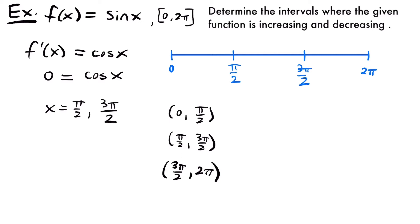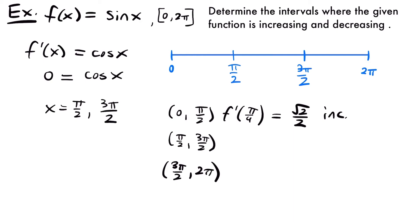Testing values on our derivative to find where the function is increasing or decreasing: for the interval between 0 and π over 2, I'll pick π over 4. So f prime of π over 4 equals cosine of π over 4, which is the square root of 2 divided by 2. That's a positive slope, so the function is increasing on that interval. You could also pick π over 3 or π over 6 — I chose π over 4 because I know that cosine value off the top of my head.